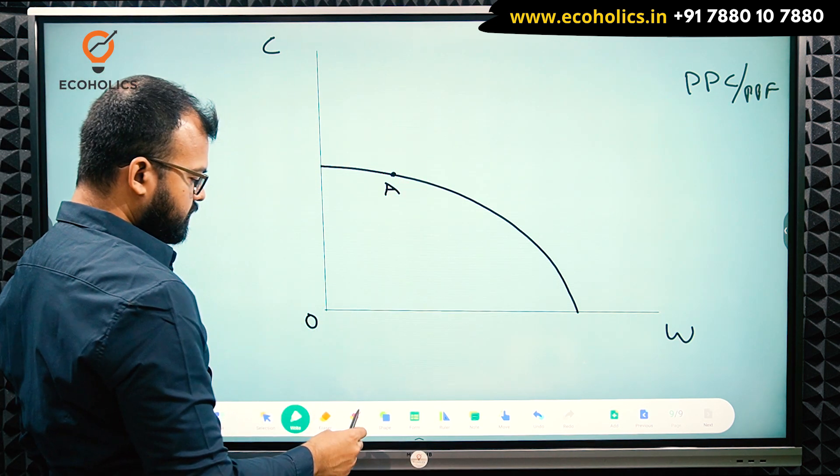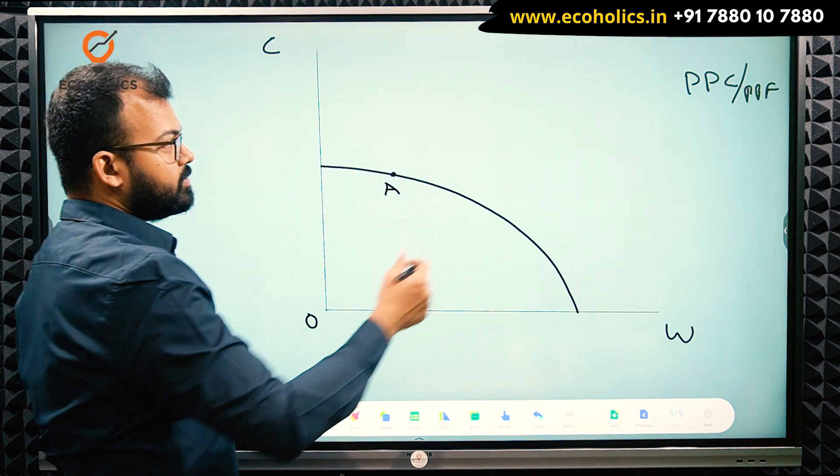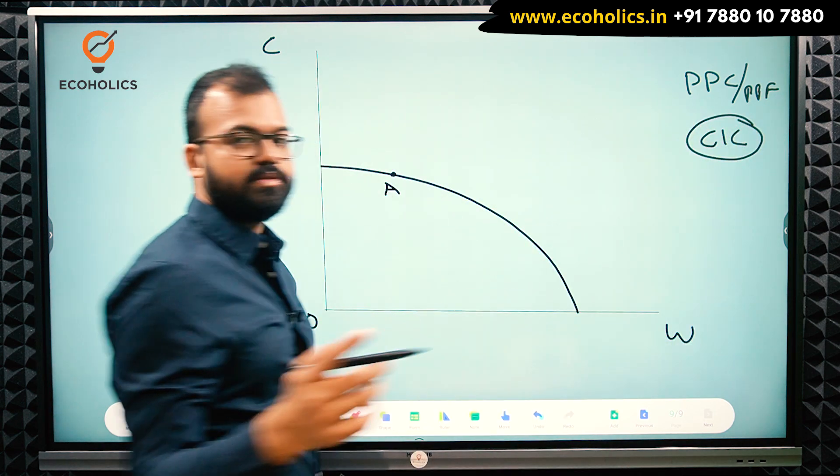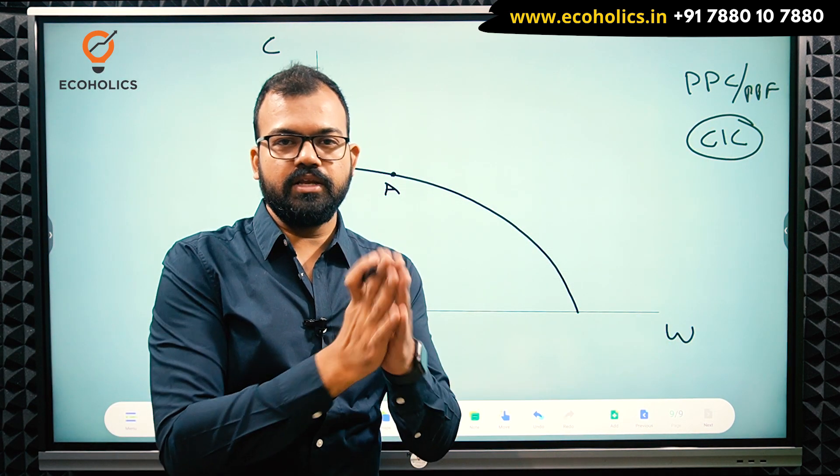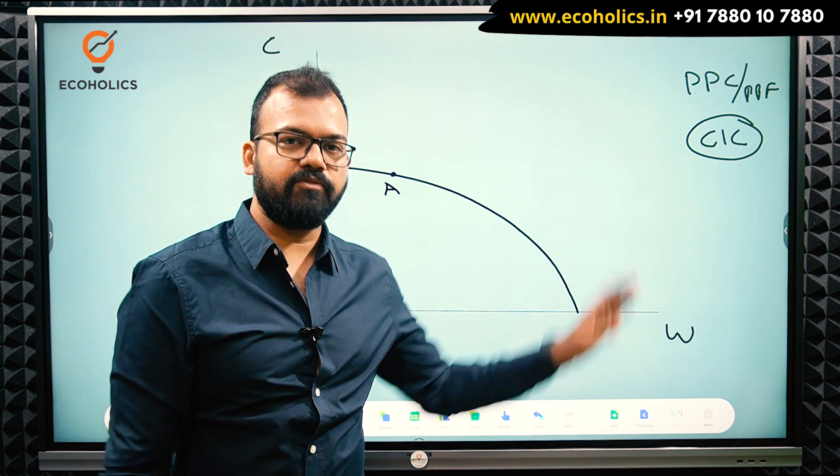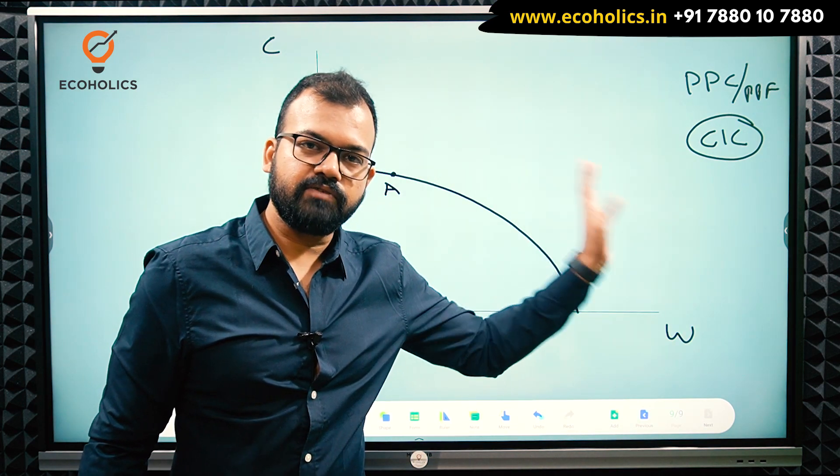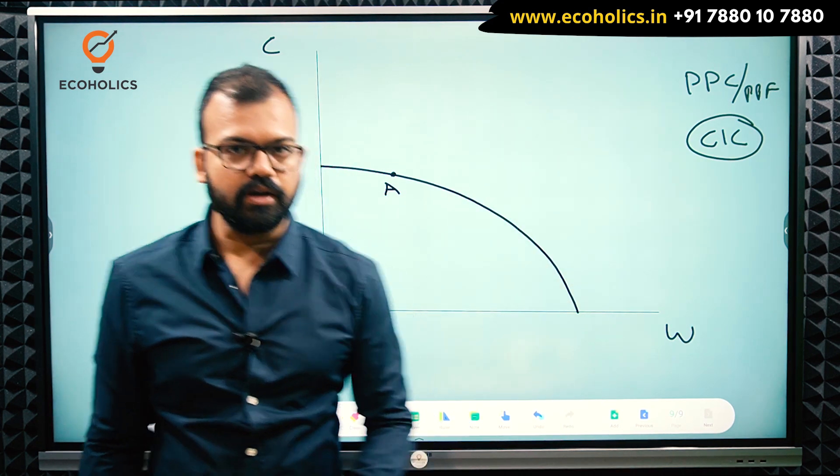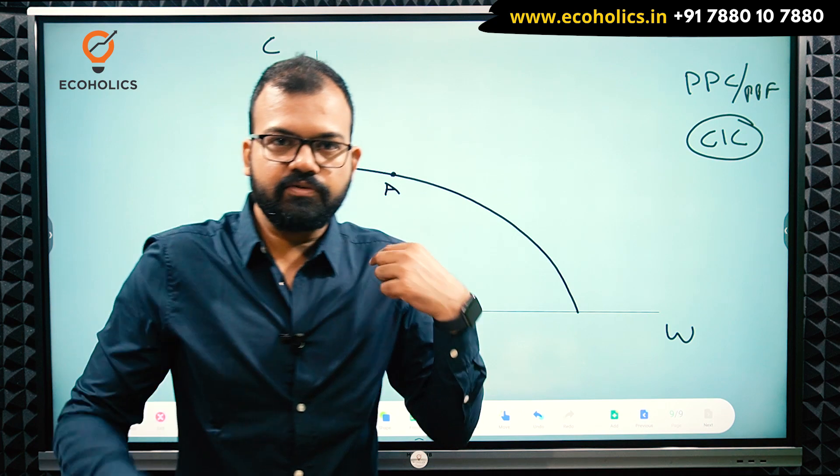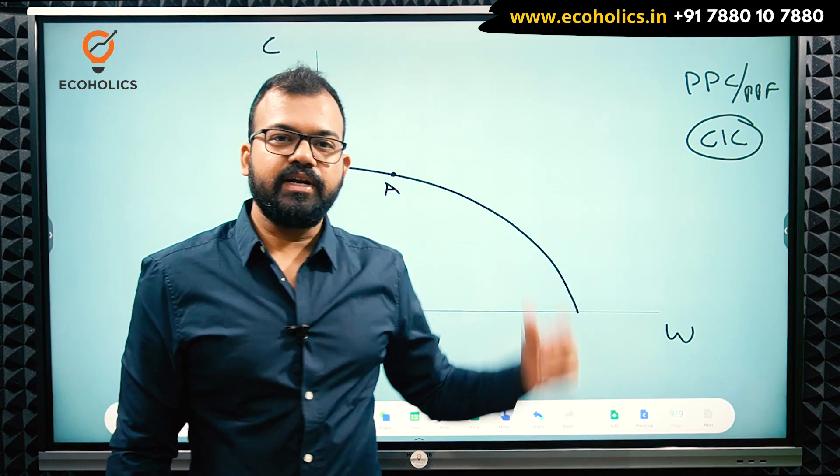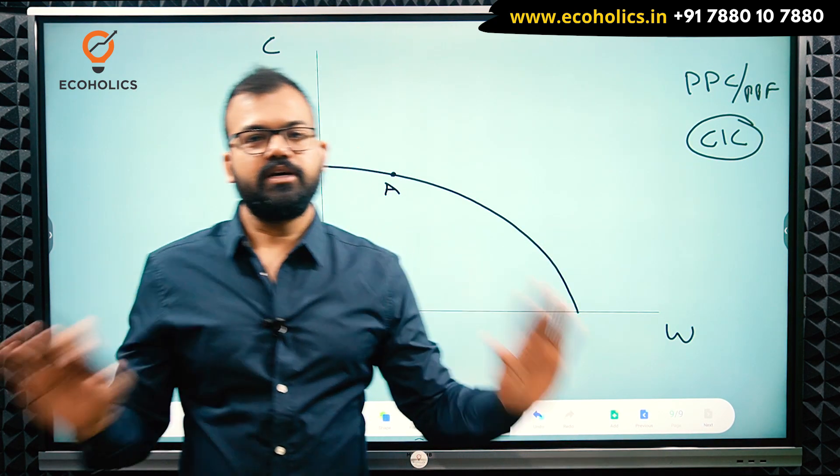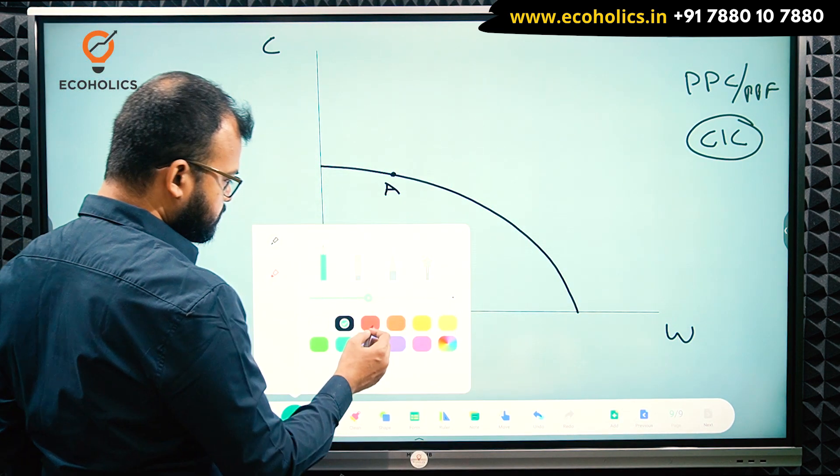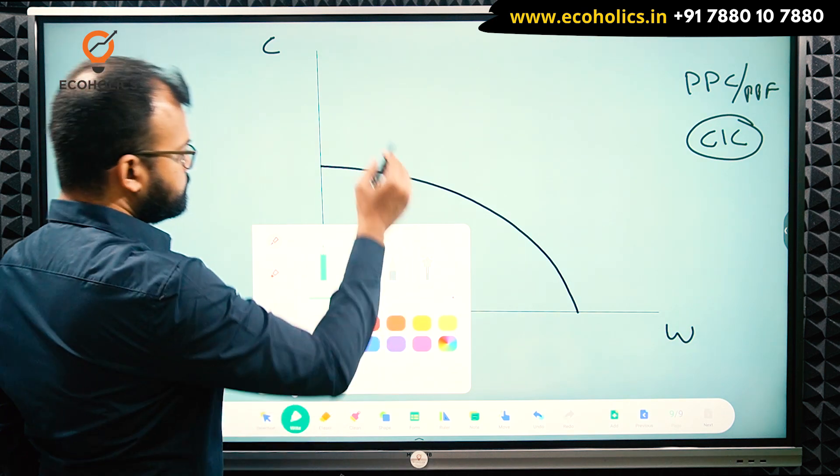What we will do is make an indifference curve. If you remember, CIC, this is what we call the community indifference curve. Community indifference curve is simple. All the indifference curve properties will remain the same. Why community? Because this indifference curve will show the consumption of whole India. It's not just for the individual. The indifference curve for me would be different from you.